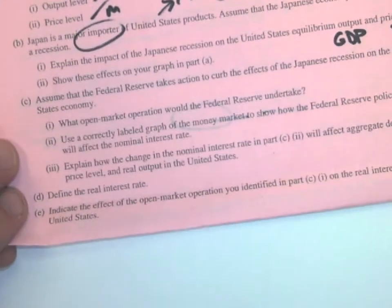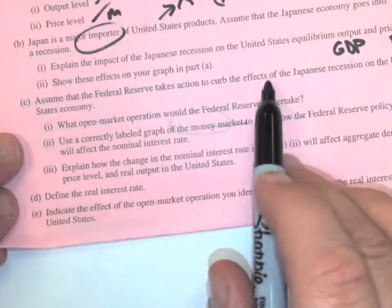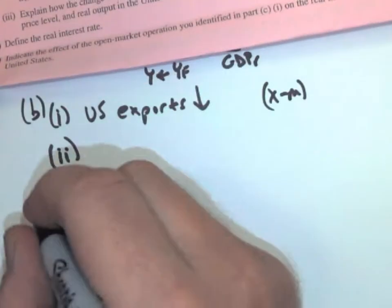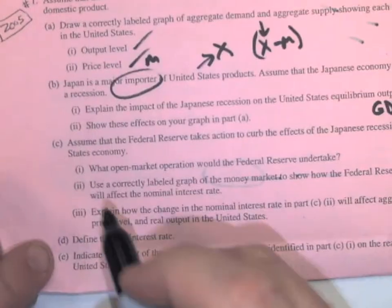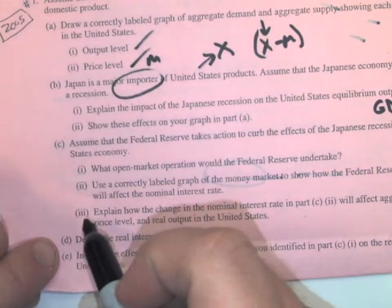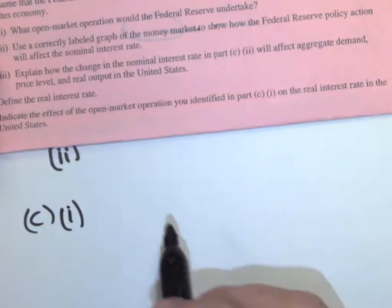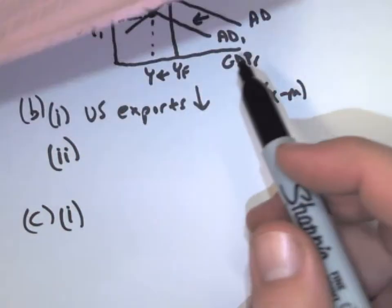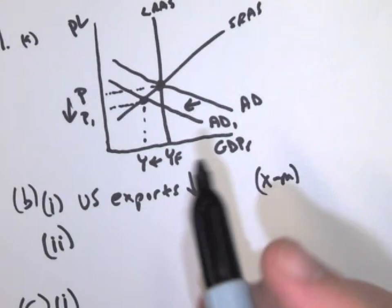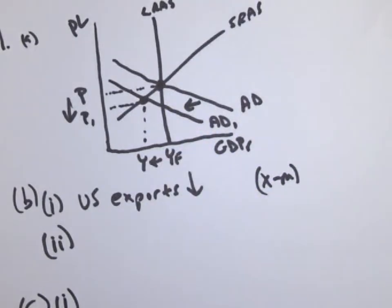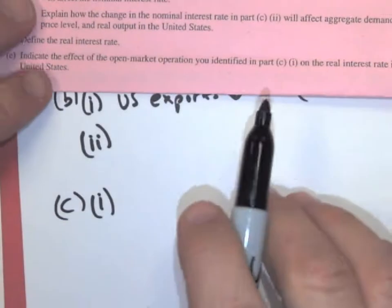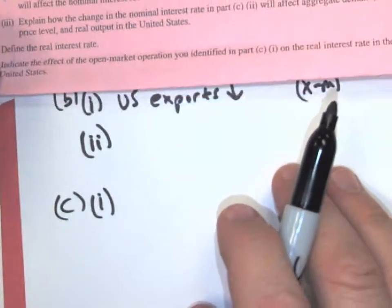Now for part C, assume that the Federal Reserve takes action to curb the effects of the Japanese recession on the United States economy. So now I have part C, and it's going to have three parts. So the Federal Reserve needs to do something. That Japan not buying our stuff put us into a recession, didn't it? So if it puts us into a recession, we're going to need monetary policy. So monetary policy can be expansionary or contractionary, just like fiscal policy. So the target, basically what monetary policy wants to do is change interest rates or influence interest rates to where people will borrow and stimulate the economy.